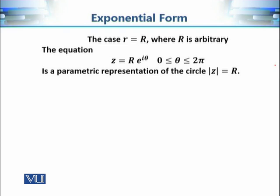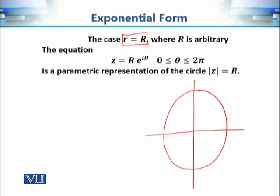Now let's consider the case where the value of r is any positive real number. In this case, we will get complex numbers which lie on a circle of radius capital R in the complex plane. The exponential form is z equals R times e raised to power iota theta.